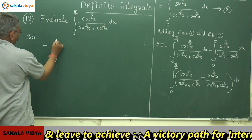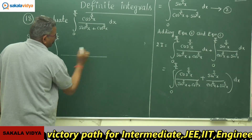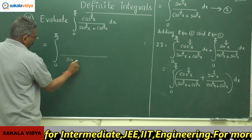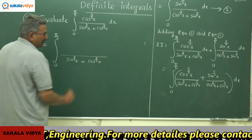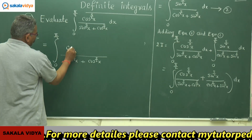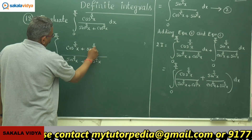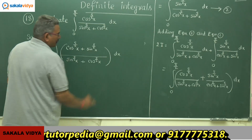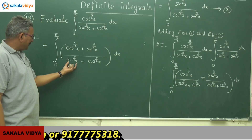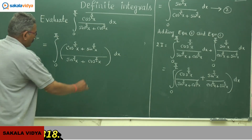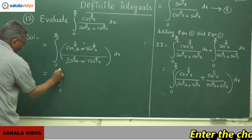This equals the integral from 0 to π/2, where the LCM is [sin^(5/2)(x) + cos^(5/2)(x)]. In the numerator we get cos^(5/2)(x) + sin^(5/2)(x) dx. We need not have any confusion — cos^(5/2)(x) + sin^(5/2)(x) is the same as sin^(5/2)(x) + cos^(5/2)(x), so these two cancel out. We get 1, and this equals the integral from 0 to π/2 of dx.